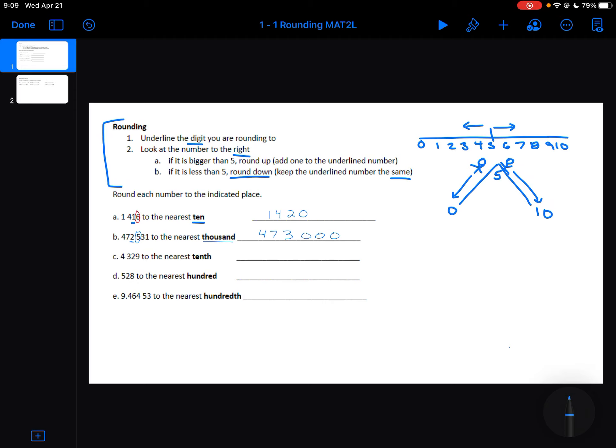Next one is 4.329 to the nearest tenth. So the first thing I need to do is underline the digit that is in the tenth spot, which is the 3. I'm going to look at the number immediately to the right, which is a 2. 2 is less than 5.